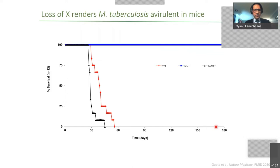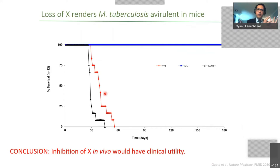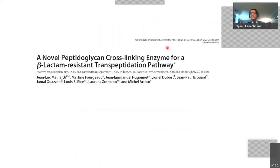So now, if we can inhibit this particular enzyme in a Mycobacterium tuberculosis-infected human, we would be able to revert from disease with mortality to no disease. This evidence told us that inhibition of this protein X in vivo would have clinical utility in transforming from morbidity and mortality to no disease and no mortality. So what is this gene? What protein does it encode?